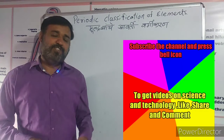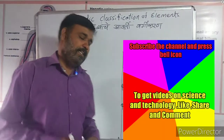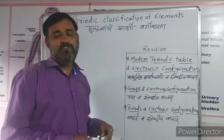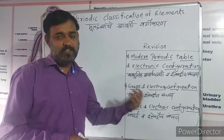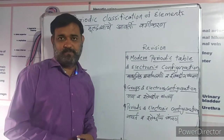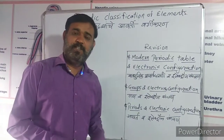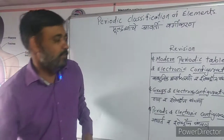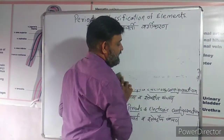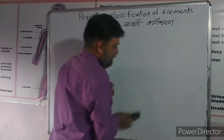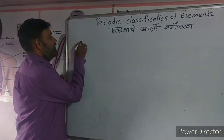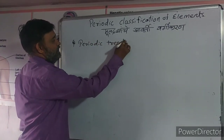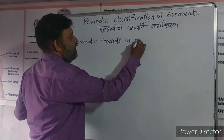First, let's recall what we learned in the last lecture. We learned about the modern periodic table and electron configuration. Under that section, we covered two points: group and electron configuration, and period and electronic configuration.